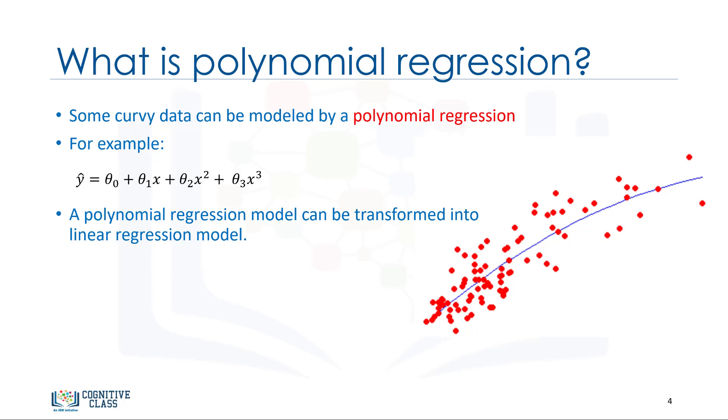Given the third degree polynomial equation, by defining x1 equals x and x2 equals x squared or x to the power of 2 and so on, the model is converted to a simple linear regression with new variables as y hat equals theta 0 plus theta 1x1 plus theta 2x2 plus theta 3x3. This model is linear in the parameters to be estimated, right? Therefore,